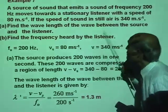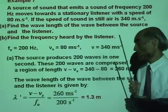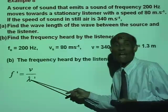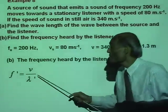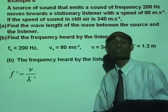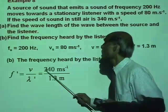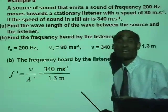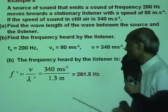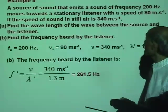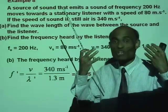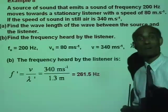We now need to find the frequency as heard by the listener. The frequency heard by the listener is F′ equal to V over λ′. We don't need to use any other formula because we have already calculated λ′. F′ equals 340 divided by 1.3, giving an apparent frequency of 261.5 hertz. The actual frequency is 200 hertz, while the apparent frequency heard by the listener is 261.5 hertz.